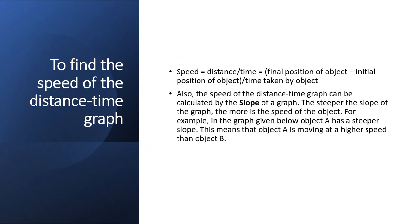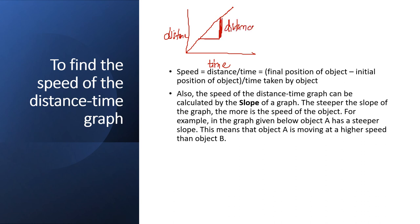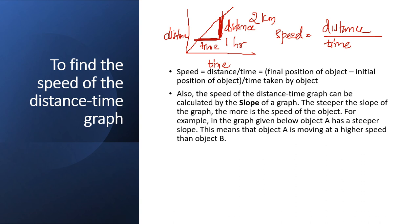To find the speed from a distance-time graph, use the slope. The vertical axis is distance and the horizontal axis is time. Speed equals distance divided by time. For example, if the distance is 2 km and the time is 1 hour, then speed equals 2 km divided by 1 hour, which equals 2 km per hour. That is how you use the graph to calculate speed.